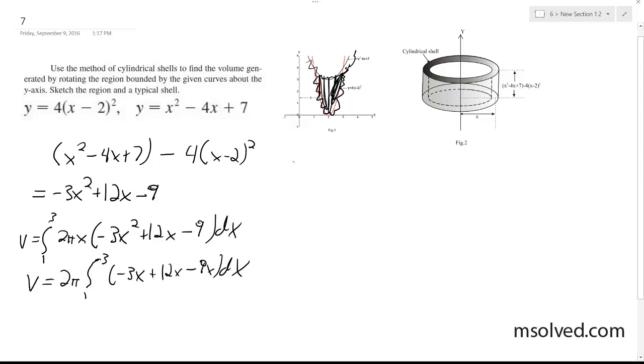So this integrated becomes 2 pi times negative 3x to the fourth divided by 4 plus 12x to the third over 3 minus 9x to the second divided by 2, from 1 to 3.